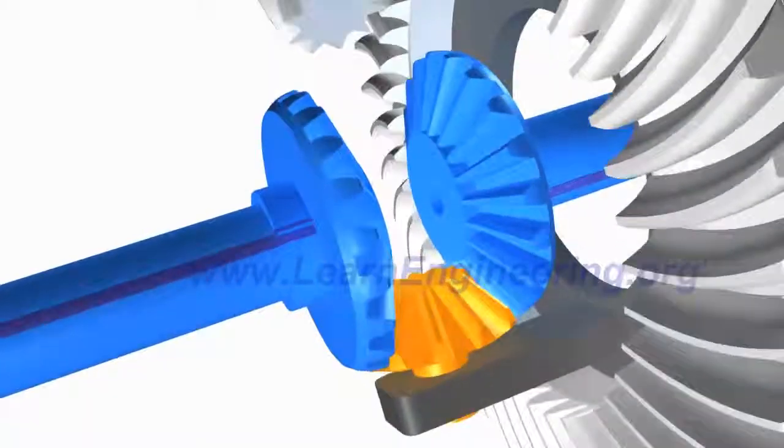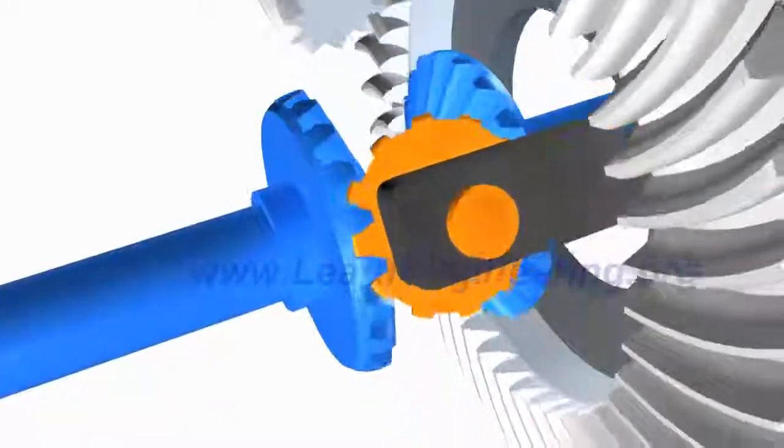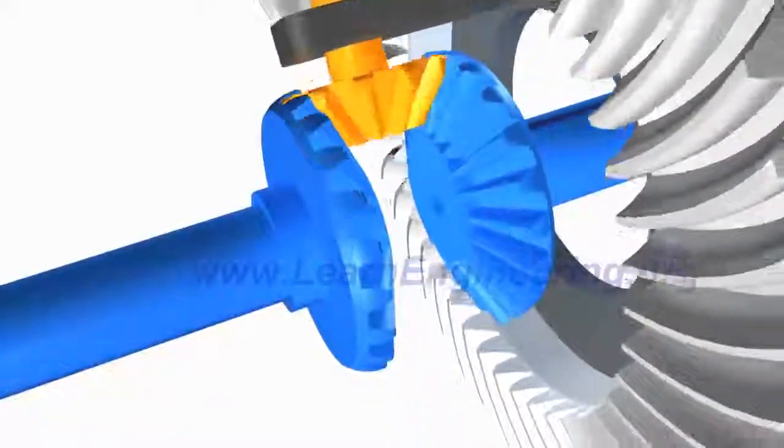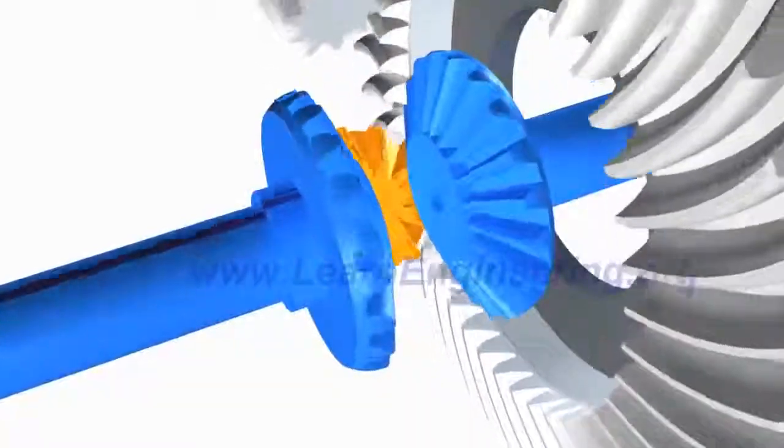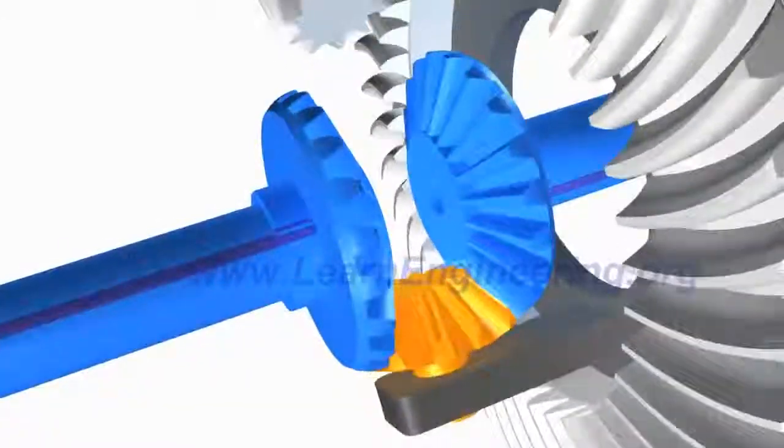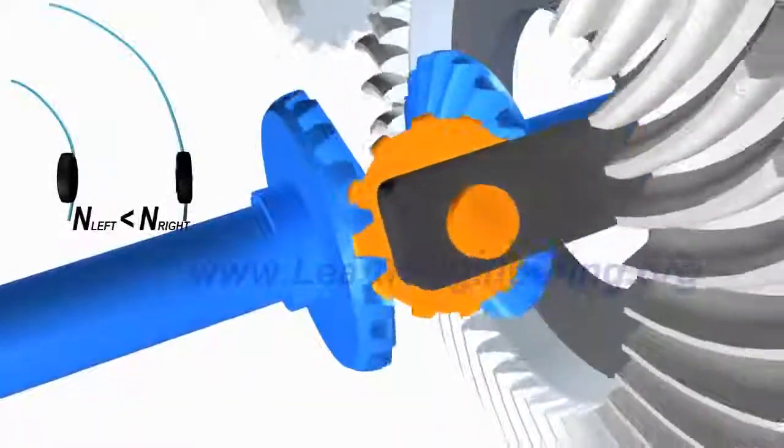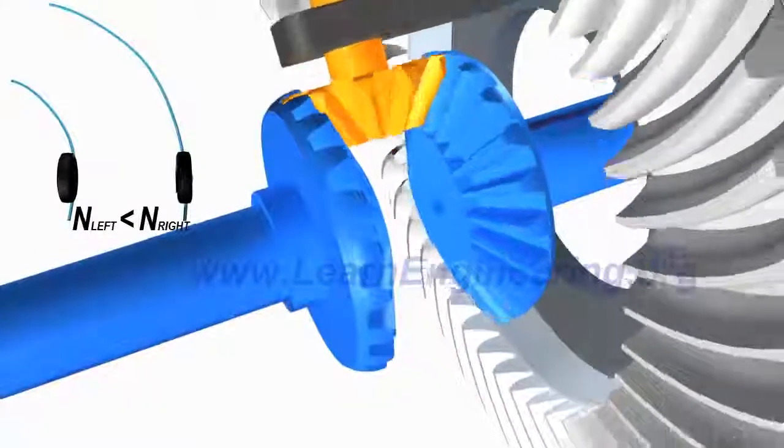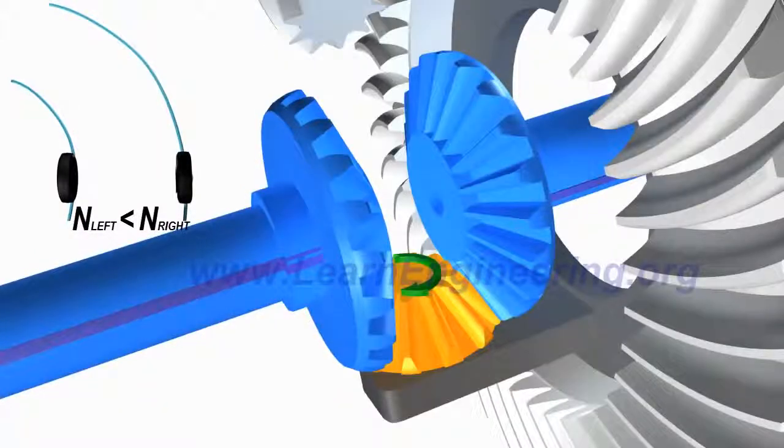This is the way the differential manages to turn left and right wheels at different speeds. While taking a left turn, the spider gear will spin in the opposite direction.